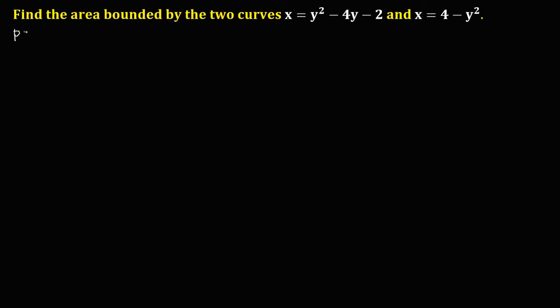First, we need to find the point of intersection, the POI. By combining these two equations, we have the first equation: x equals y squared minus 4y minus 2, and the other one: x equals 4 minus y squared. To find the solution, we're going to use the substitution method.